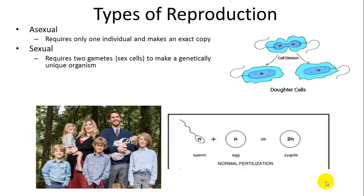Sexual reproduction involves two gametes, or sex cells, to make a genetically unique organism — a combination of the two donors of the sex cells. If I asexually reproduced, all of my progeny would look exactly like me, just at different stages of development. Sexual reproduction allows for genetic recombination, which is why you don't look exactly like one of your parents.